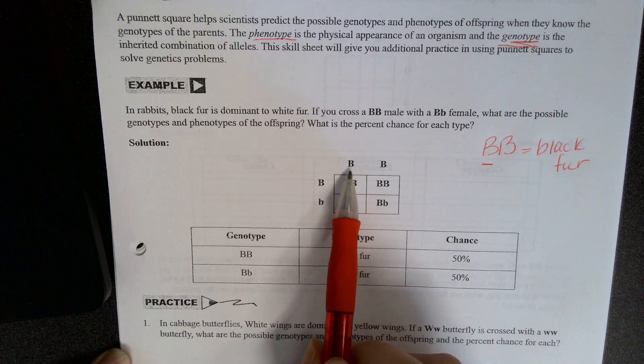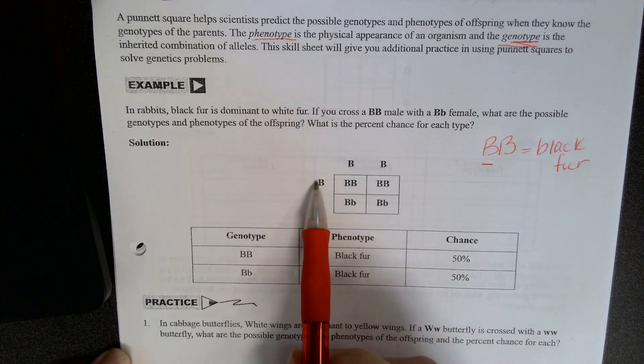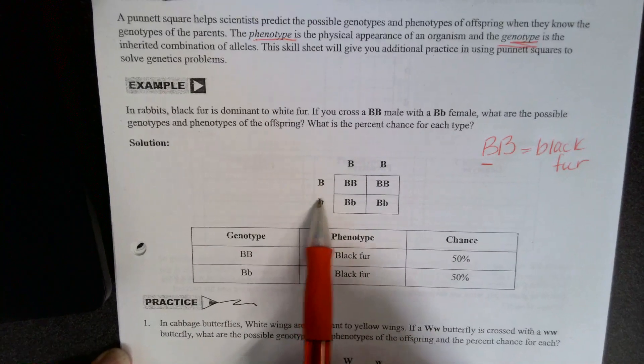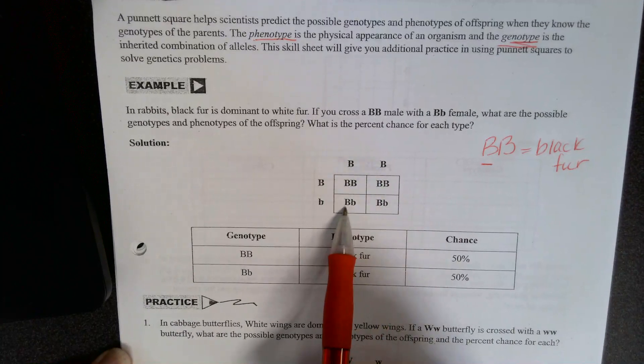All right, so this is parent one allele. They're big B, big B. And then parent two is big B, little b. And then what you do to fill out your Punnett Squares, you always are going to have four possibilities for the offspring.